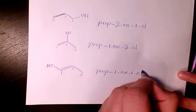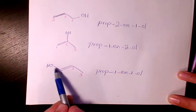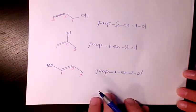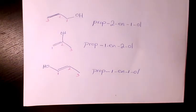1-ol. Prop-1-en-1-ol. So basically, these are three different names for three different alcohols.